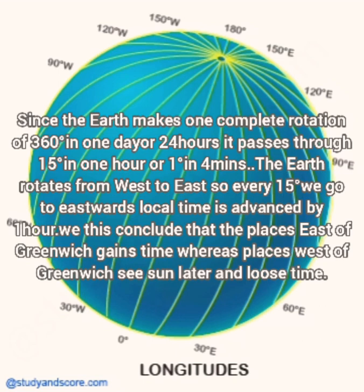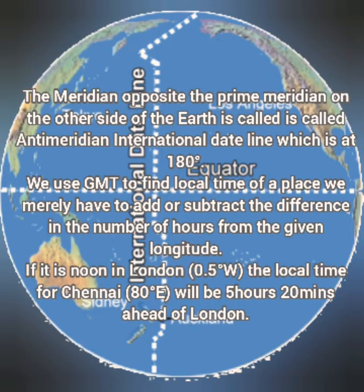If we travel 15 degrees west from the prime meridian, we deduct one hour, meaning we are one hour behind the prime meridian. When we travel towards the east, time is increased; when we travel towards the west, time is decreased. The meridian completely opposite to the prime meridian on the other side of the earth is called the anti-meridian, also known as the International Date Line, which is at 180 degrees. The International Date Line is not a straight line — it is a zigzag line because it only falls over the ocean. It divides the earth into the eastern and western hemispheres.